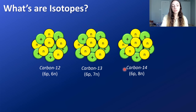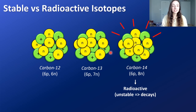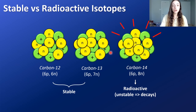For example, carbon has three naturally occurring isotopes: carbon-12 with six neutrons, carbon-13 with seven neutrons, and carbon-14 with eight neutrons — all with six protons, because that defines carbon. The difference is that carbon-14 is radioactive; that nucleus is unstable and decays over time into a stable product. Carbon-12 and carbon-13 are stable isotopes, and we'll discuss their applications later.